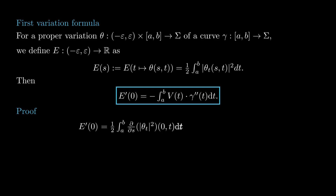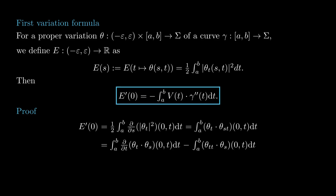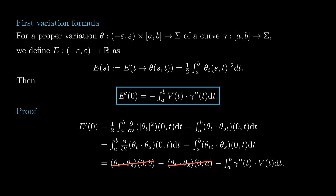To compute this, we differentiate under the integral sign. We can do this as theta is smooth, and apply the product rule to obtain the integral of the dot product between the partial derivative of theta with respect to t and the partial derivative of theta with respect to s and t. This can be integrated by parts, as again by the product rule, the integrand is one term appearing in the derivative of the dot product between theta_s and theta_t. Since the variation is proper, theta_s vanishes at both initial and final time, so the boundary term is zero. On the other hand, theta_s is by definition V, and theta_tt equals the acceleration of gamma, finishing our computation.